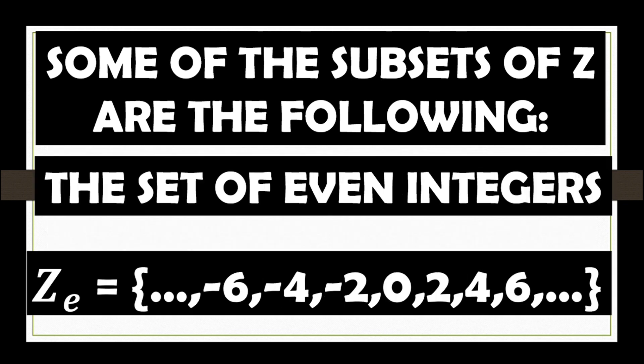The set of even integers consists of ellipses negative 6, negative 4, negative 2, 0, 2, 4, 6 ellipses.